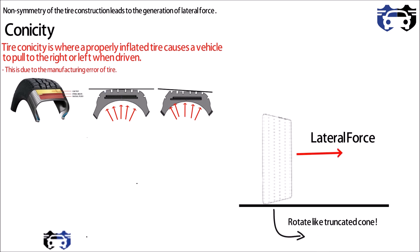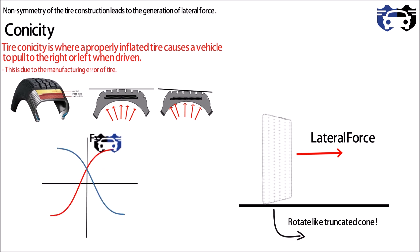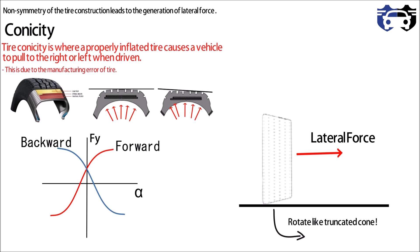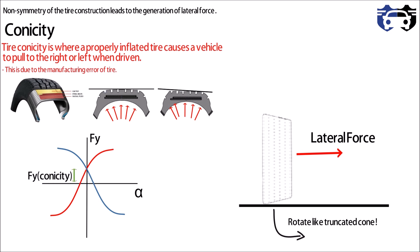This makes the tire tapered and it will have a tendency to rotate in that direction, experiencing a lateral force. Note that the direction of lateral force does not change when the rotation of the tire changes. The graph shows lateral force versus slip angle alpha — the red curve is for forward movement and blue for backward. Both curves intersect above the x-axis with the same value at zero slip angle; this value is F5 conicity.